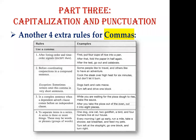Now, four extra comma rules. Rule one: use a comma after listing-order and time-order transition signals — first, second, next, after that — except after 'then,' which does not take a comma. Rule two: use a comma before coordinating conjunctions in a compound sentence. If you don't, you are making a run-on error — compounding two simple sentences without a comma and without a coordinating conjunction. Example: 'Some people like to travel, and others like to have an adventure.'